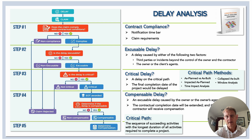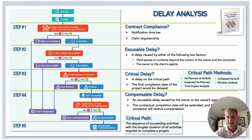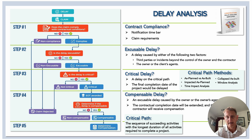If the delay is judged as excusable, one moves on to step three — criticality. A critical delay is a delay on the critical path, and the result is that the completion date will be delayed. The critical path is formally defined as the sequence of succeeding activities with the longest duration of all activities required to complete a project. Anything that happens within this sequence would ultimately postpone or delay the completion date.